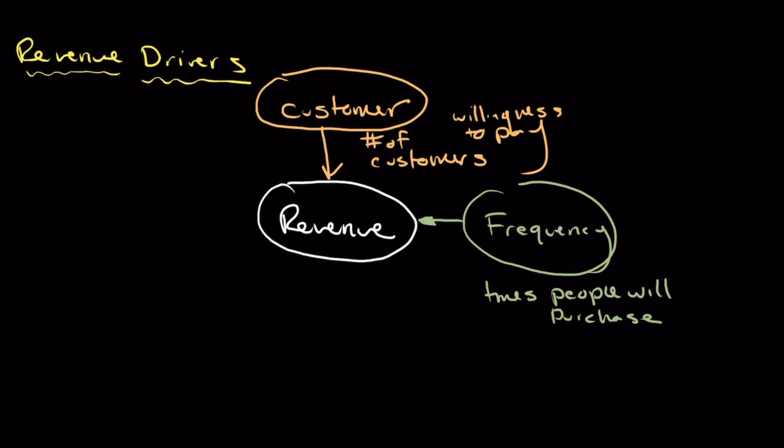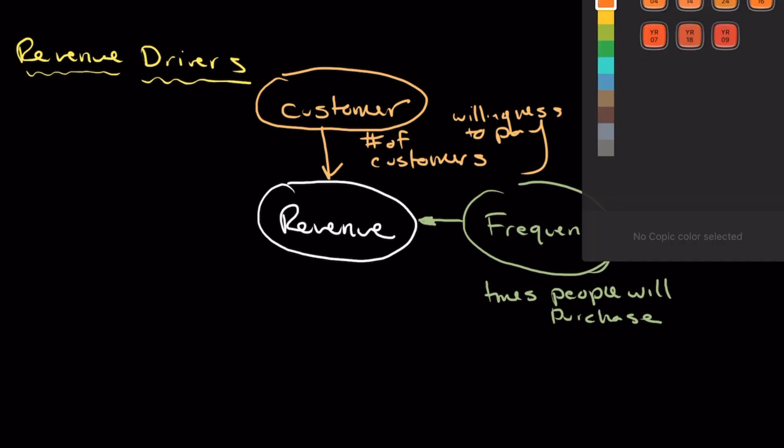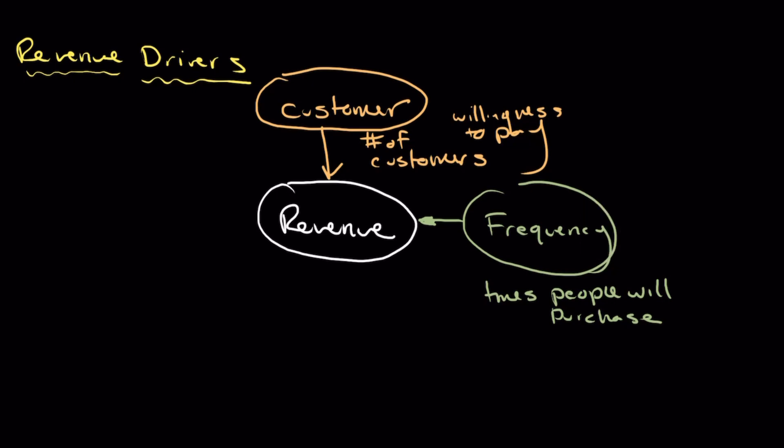The third driver for revenue is your price. What we charge to the customer directly influences our prices. One thing that many young entrepreneurs feel is they have direct control over what they price, and that is true to an extent. Price is a very easy thing to set but a very hard thing to dial in because while the business sets their pricing, it is largely dictated by what a customer is willing to pay. Setting an effective price is really a trial and error process.